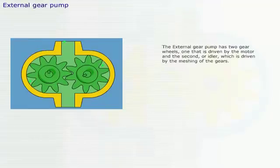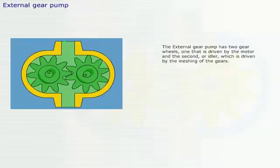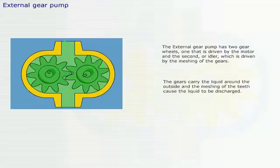The external gear pump has two gear wheels, one driven by the motor, and the second, or idler, which is driven by the meshing of the gears. The gears carry the liquid around the outside, and the meshing of the teeth cause the liquid to be discharged.